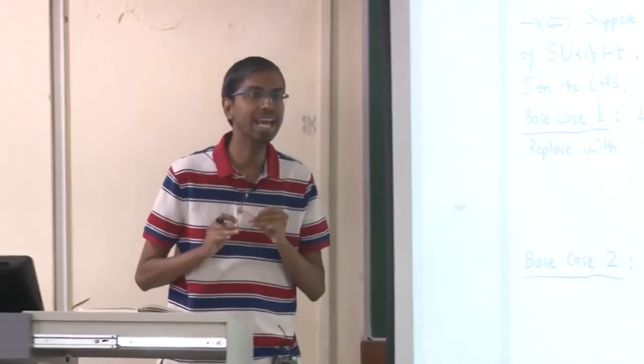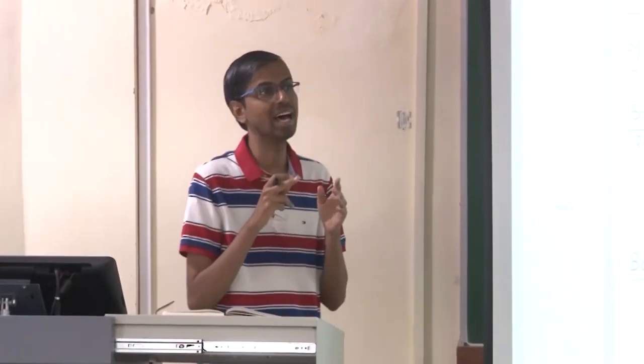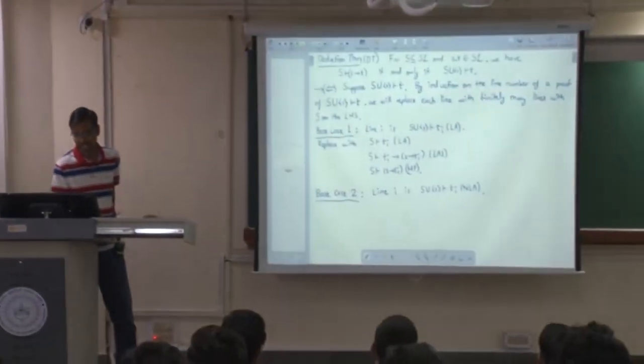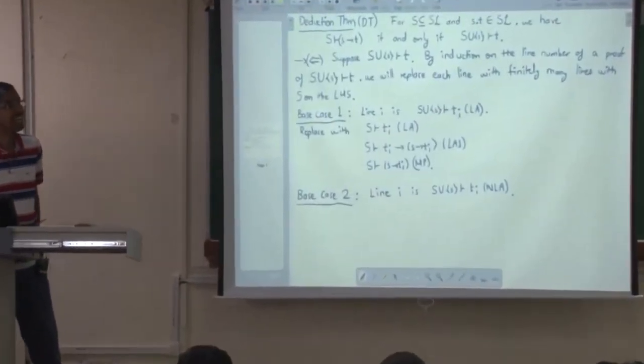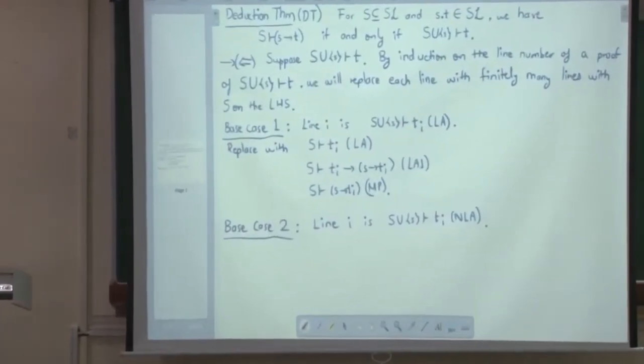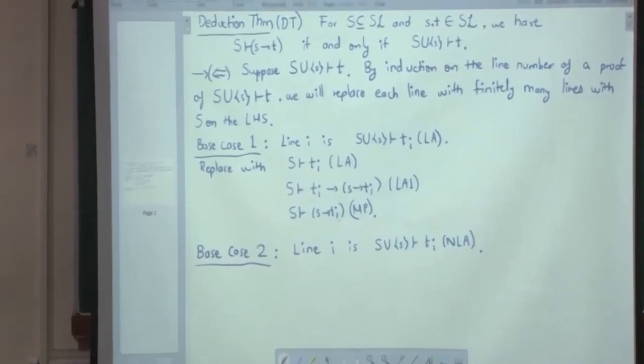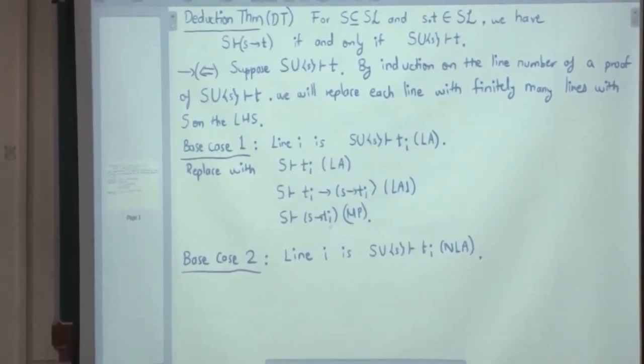It will be only S and whenever we are replacing one line with something appropriate, then at the end, if the line is S union singleton s proves T_i, then at the end we always need S proves S implies T_i. That's our goal.